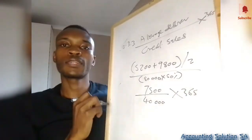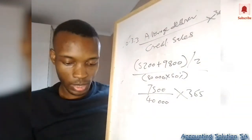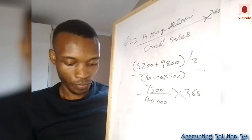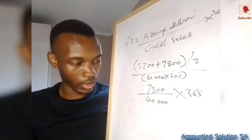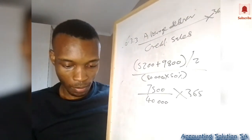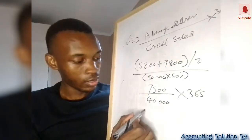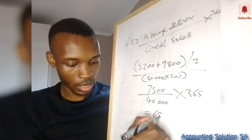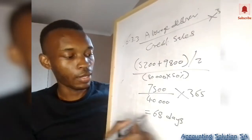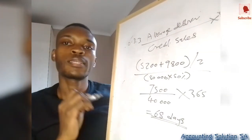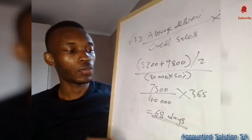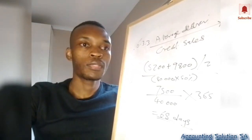Completing the calculation: 7,500 divided by 40,000, multiplied by 365, gives us 68 days. This is very bad — the norm is that debtors must pay within 30 days. If it's more than 30 days, it's not good.